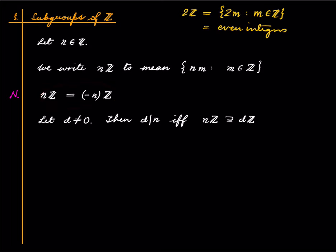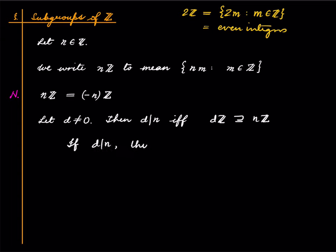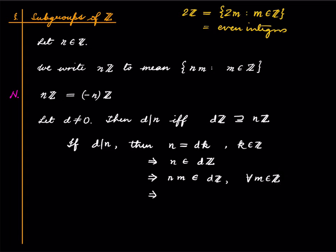Here is a simple observation: nℤ equals -nℤ. Also, something interesting: a non-zero integer d divides an integer n if and only if dℤ contains nℤ. Why? Because if d divides n, then n = dk for some integer k, which implies n ∈ dℤ, which implies n·m ∈ dℤ for all m, which implies nℤ ⊆ dℤ.